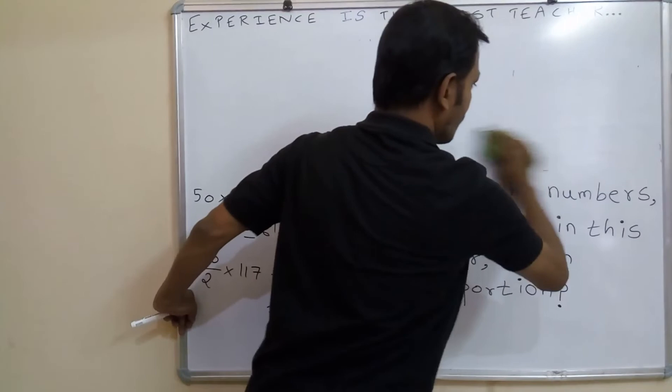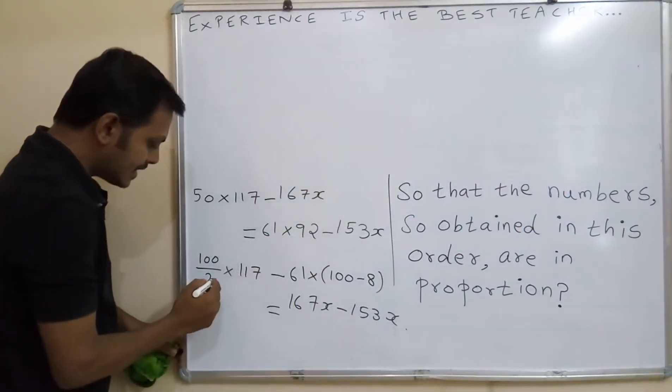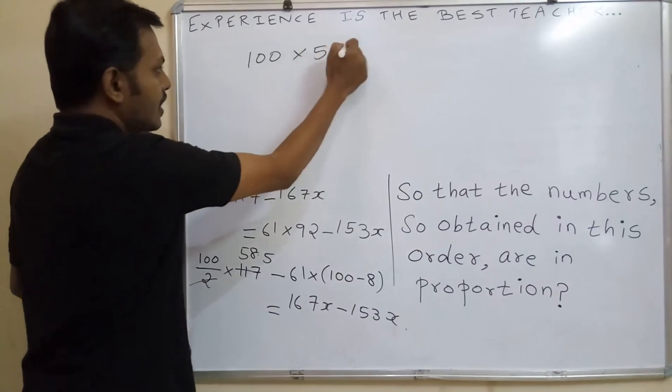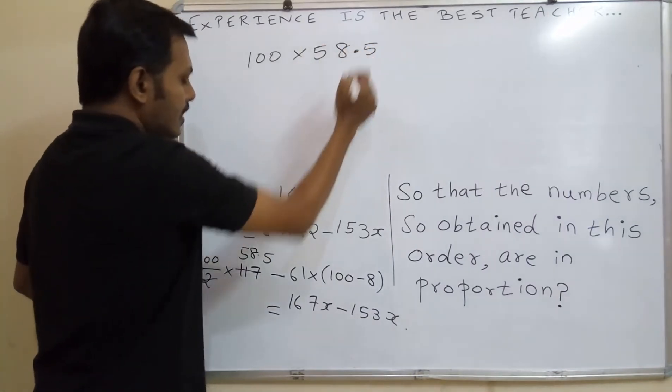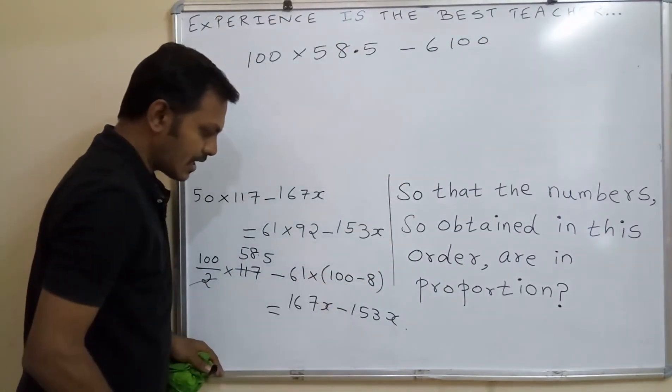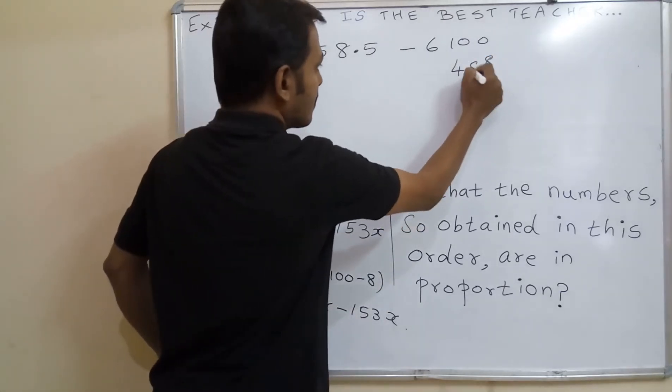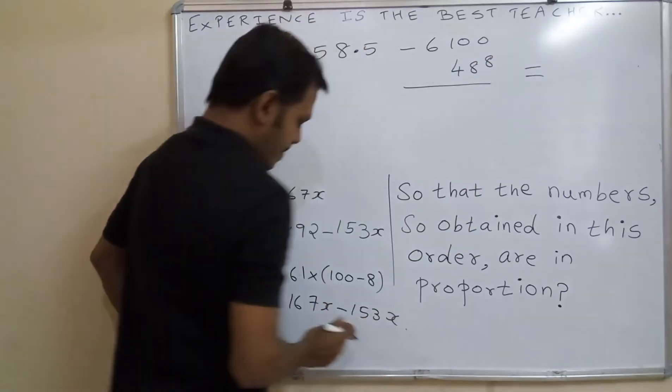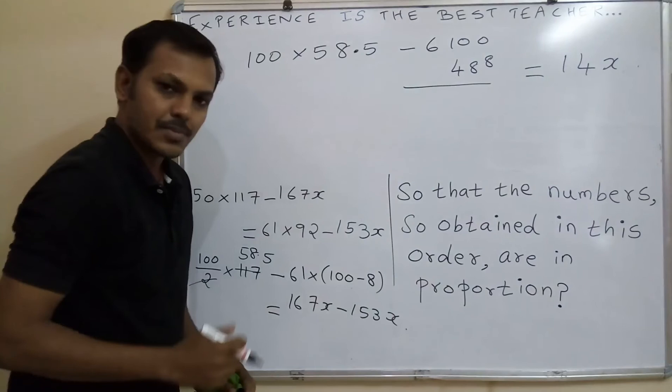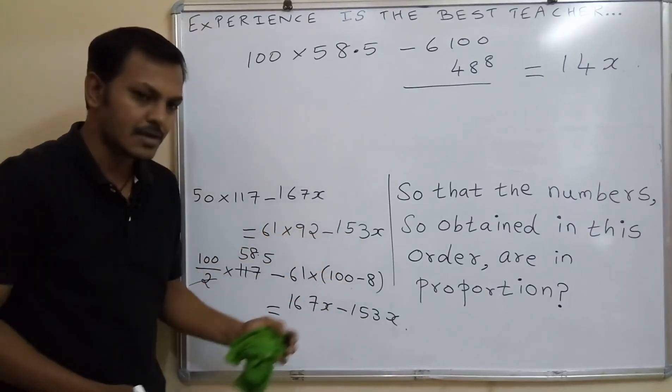It is given 4 numbers, so you have subtracted x, that is unknown. By canceling this, we will get 58.5. So 100 into 58.5, 100 into 58.5 minus 6100. See, 61 into 100, 6100. Into 188, 68 is 488. Which is equal to 167x minus 153x, we will get 14x. See, we can use the distributive property over subtraction easy. So that we have converted this 92 into 100 minus 8.